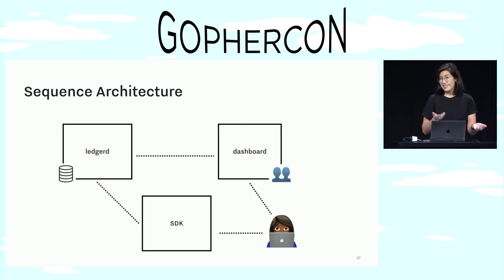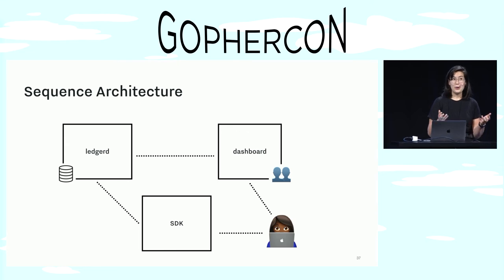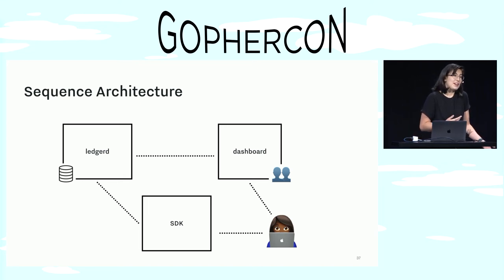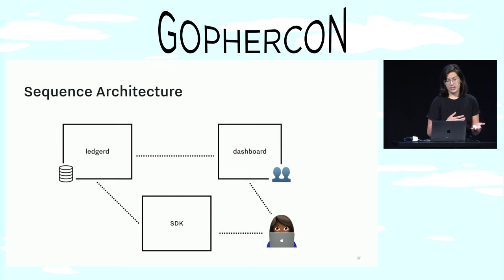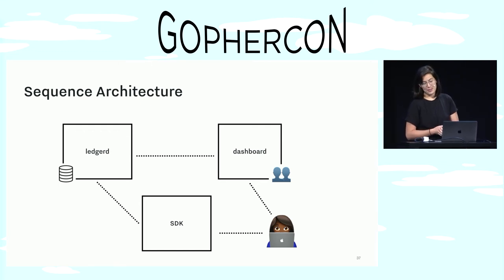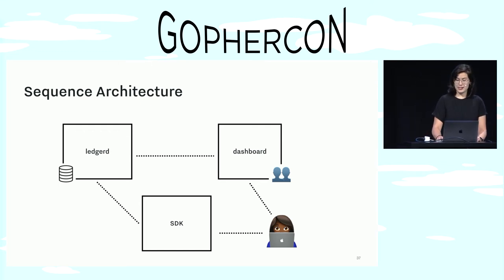So maybe you can see the auth problem that comes up here — who owns auth? Because Dashboard is the only service that knows about users, but LedgerD has API endpoints that need to be protected. And this kind of situation where Dashboard needs to make auth decisions for actions executed inside LedgerD — this is the recipe for a confused deputy. And macaroons are perfect for unconfusing the deputy.